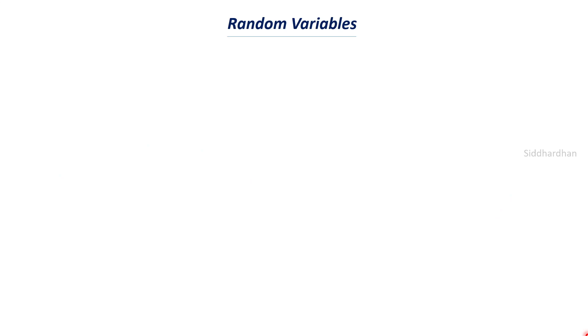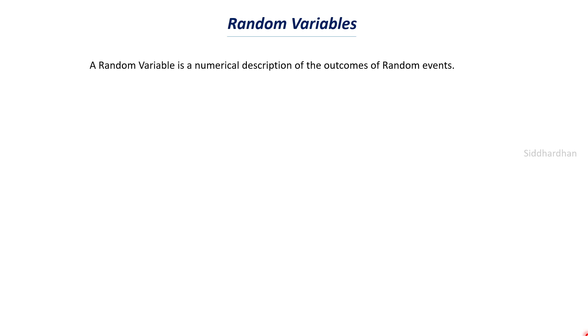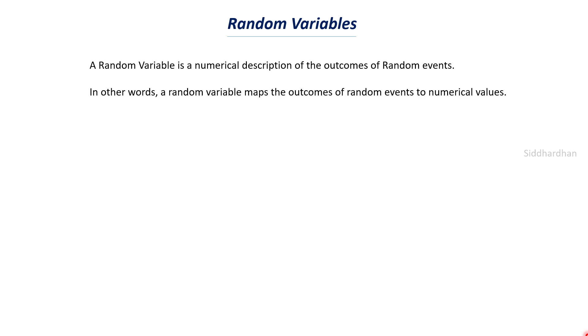First of all, I'll give you a recap on random variables. In the previous video, we discussed in detail about what is meant by a random variable with some examples. A random variable is a numerical description of the outcomes of random events. There are several random events like tossing a coin or rolling a dice, and a random variable maps the outcomes of those random events to numerical values.